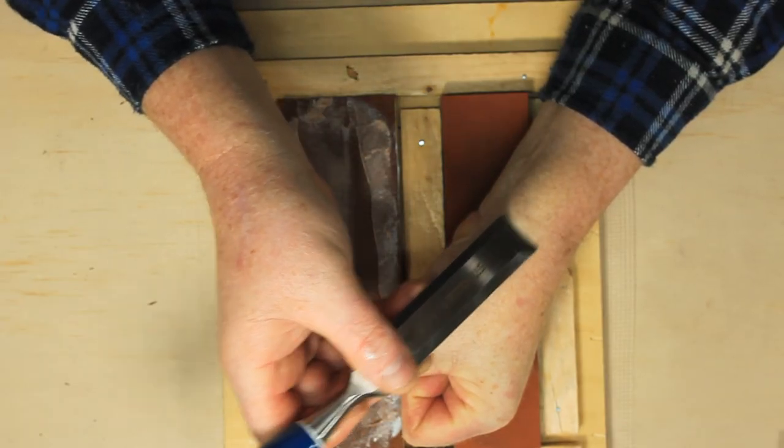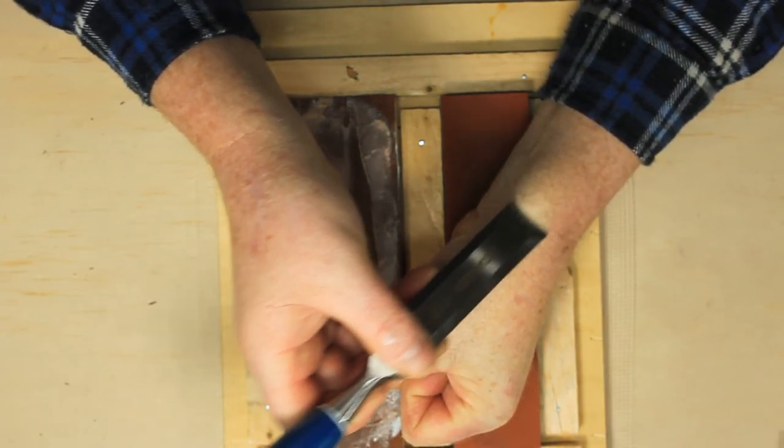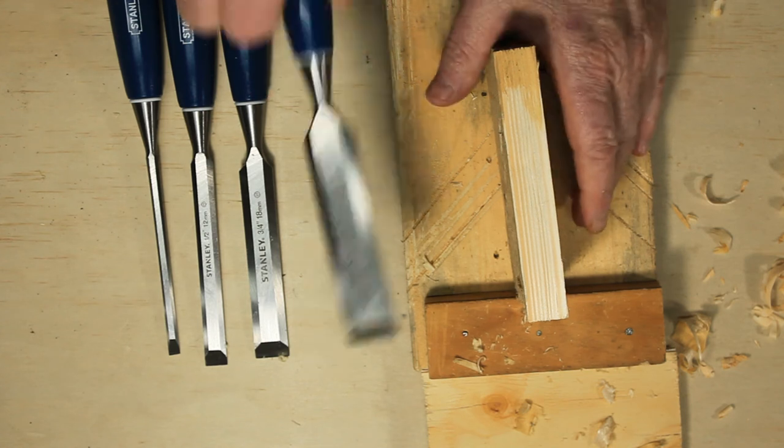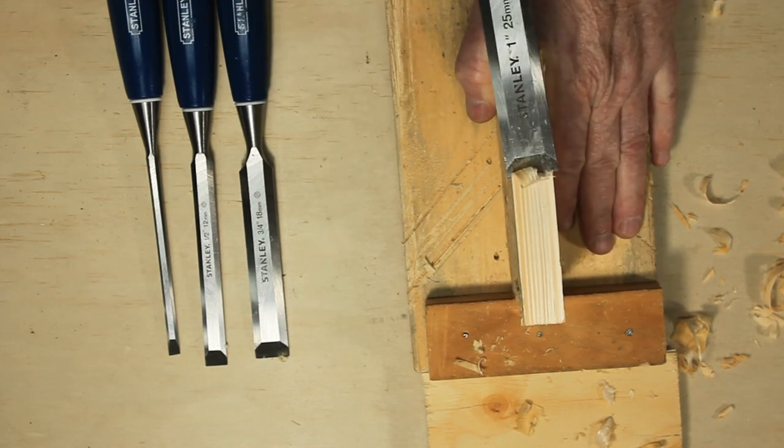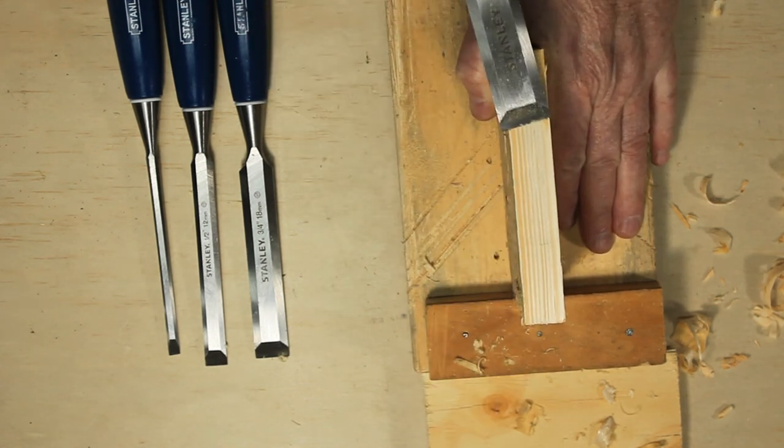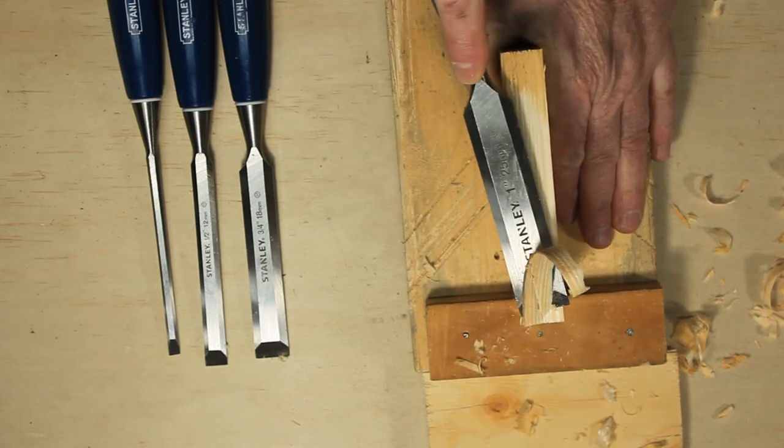The fully masculine sharpness check traditionally involves shaving your arm with the chisel. But I prefer to make some cuts on a piece of wood. I honed and stropped the other three chisels off camera.